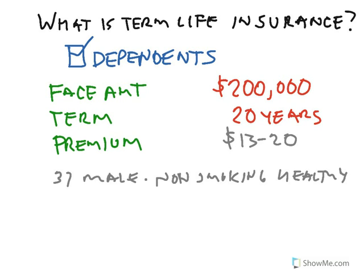So if I were to go out and get a term life policy, I would pay $13 to $20 a month. And if something happened to me over a 20-year period, and my premium was paid on time, provided the insurance company was still solvent, they would pay my beneficiaries the $200,000.